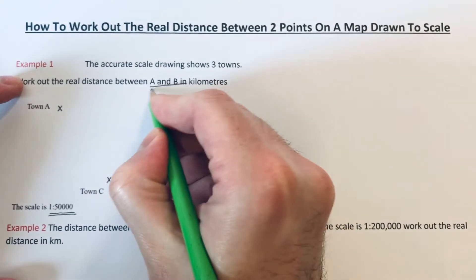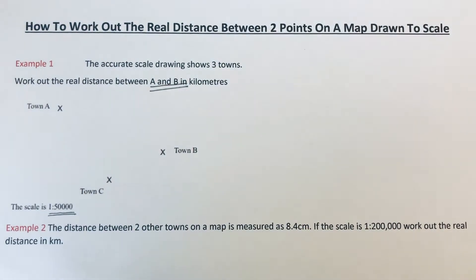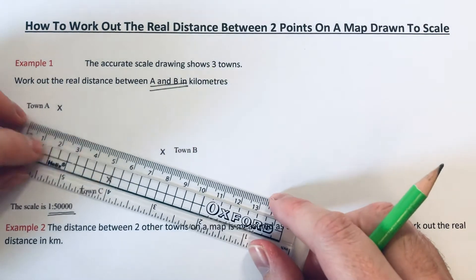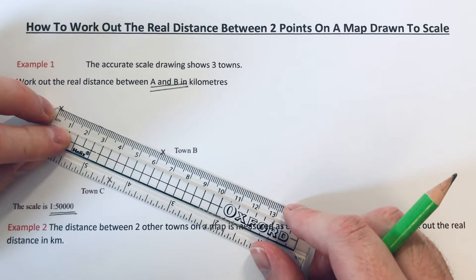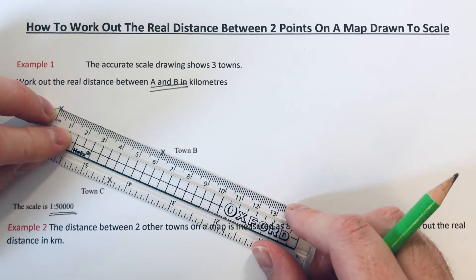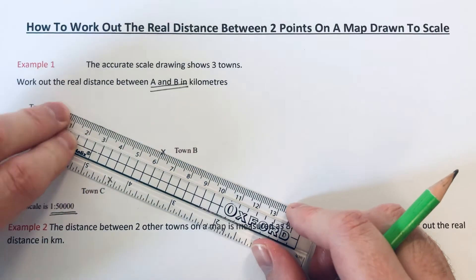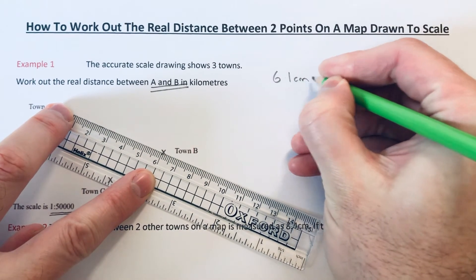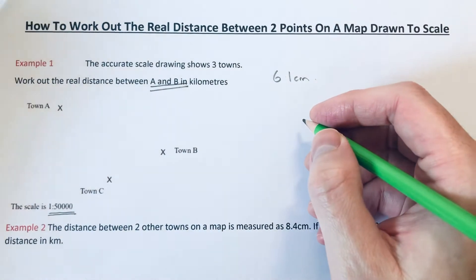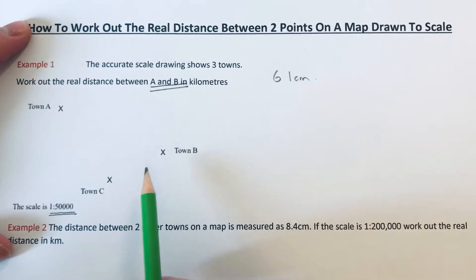So the first thing I'm going to do is measure the distance between A and B with a ruler. The distance between A and B is 6.1 centimeters. That is the distance between A and B on the map.